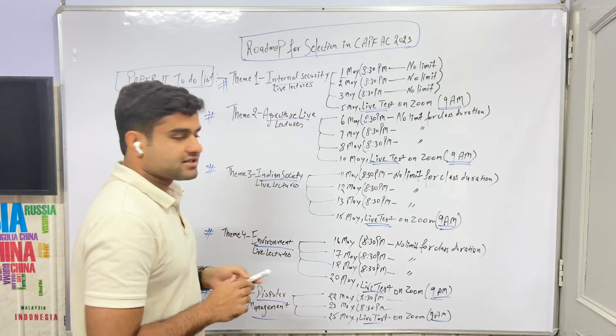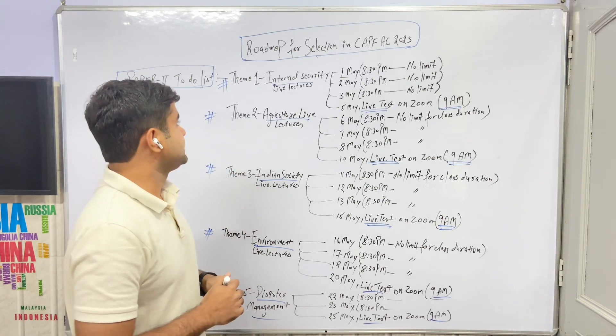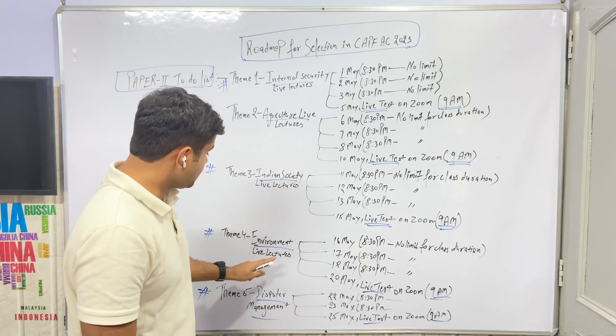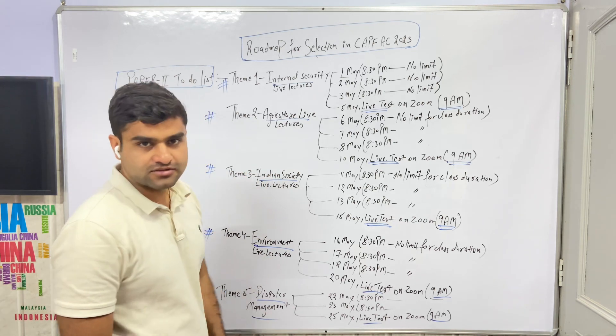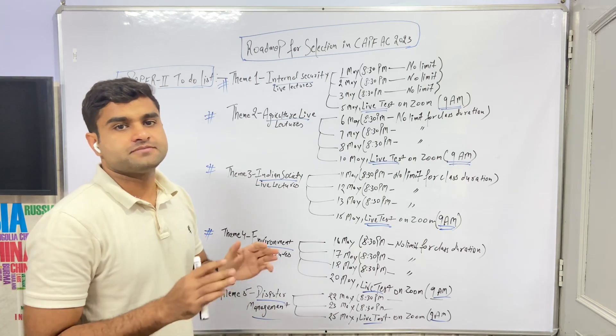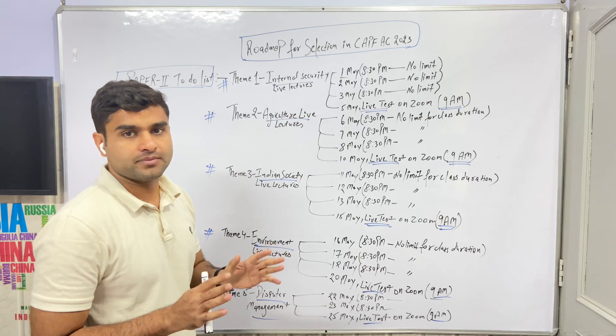What will you cover in this month? You will cover 5 to 7 themes: first Internal Security, second Agriculture, third Indian Society, fourth Environment, fifth Disaster Management, sixth Indian Economy, and seventh Abstract Topics - philosophical topics and how to handle them.